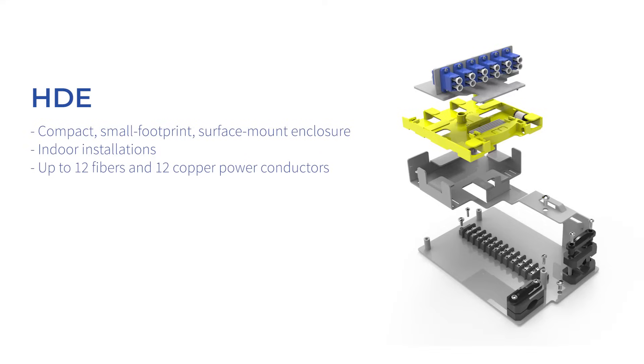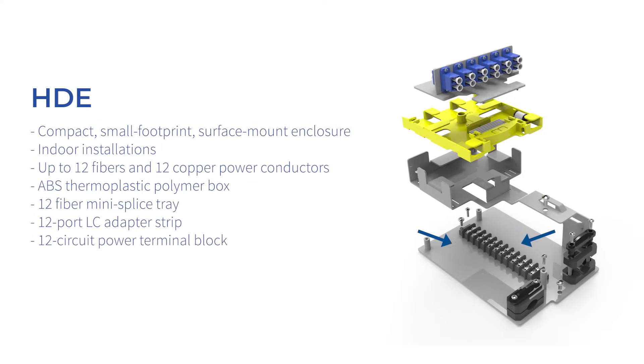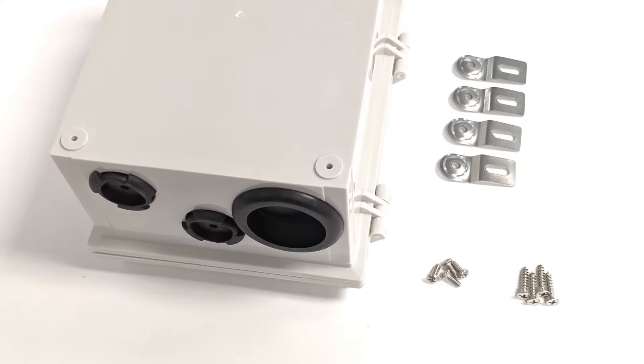It includes a robust ABS thermoplastic polymer box housing a 12-fiber mini splice tray, a 12-port LC adapter strip, and a 12-circuit power terminal block. Should you decide to mount the HDE onto a wall, you can use the four ear brackets and screws provided in the hardware kit.